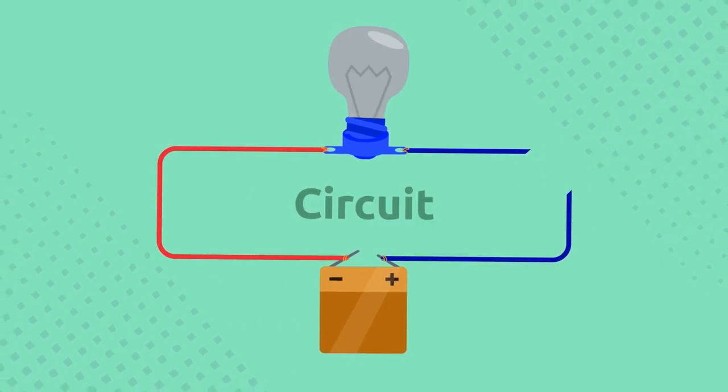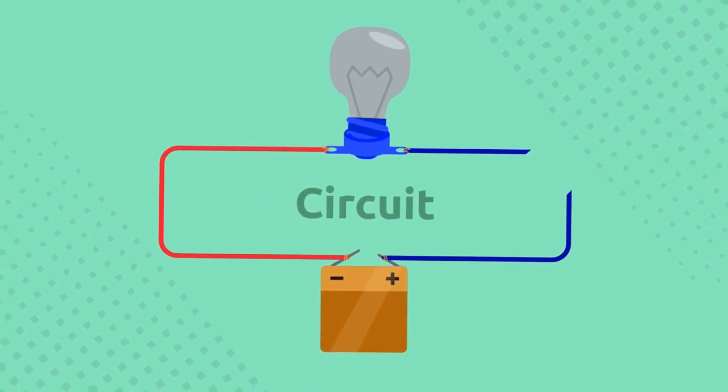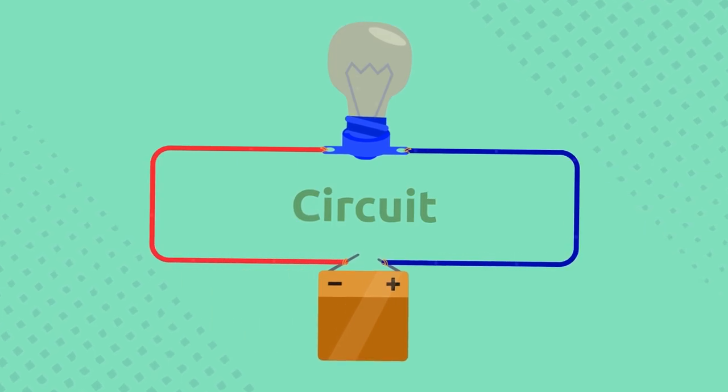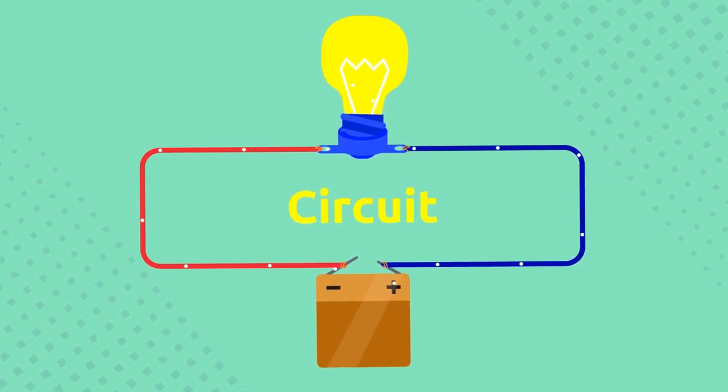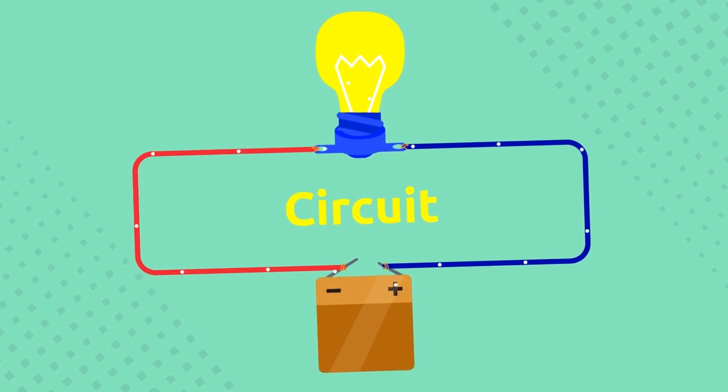If I disconnect this circuit, the electric current stops flowing and the light bulb turns off. When I reattach the wire, the light bulb turns back on. How cool is that?